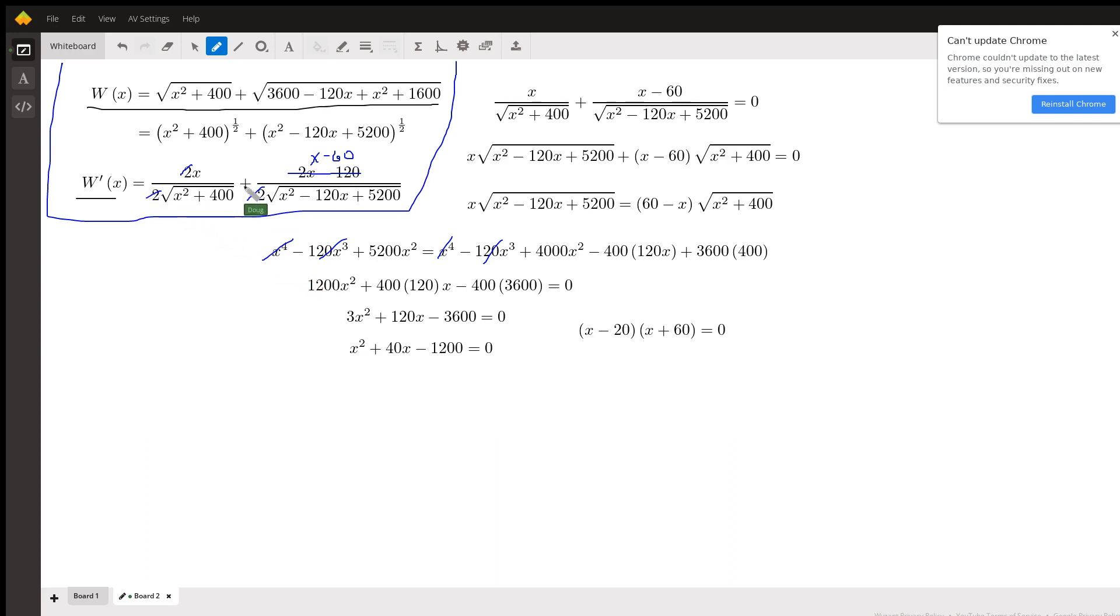And now if we set that derivative equal to zero we can get the critical numbers for this function. And I won't go through all this—you can pause the video and check the algebra—but if I multiply through by the least common denominator of both of these denominators to clear the equation of fractions, this is what I get.